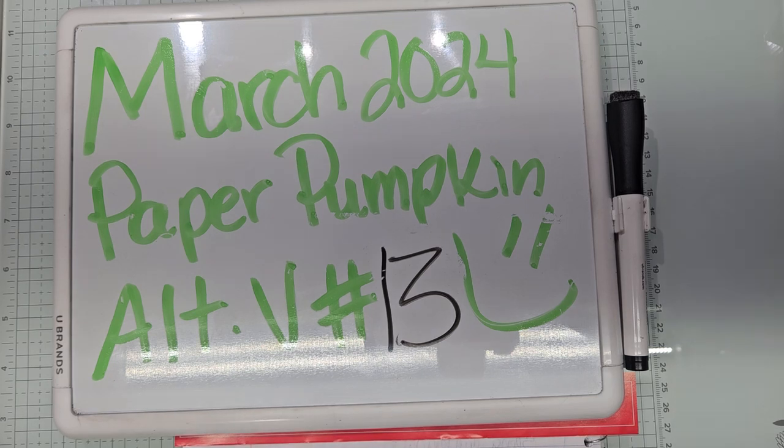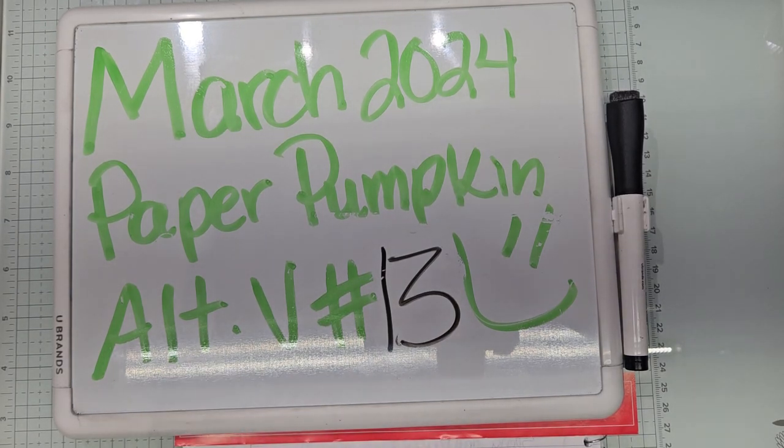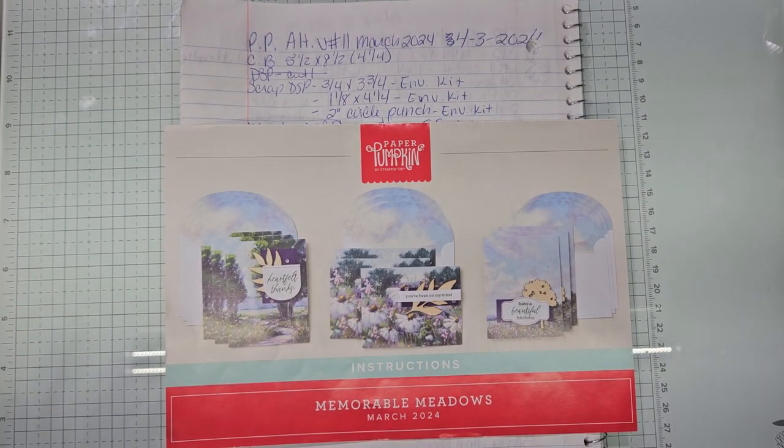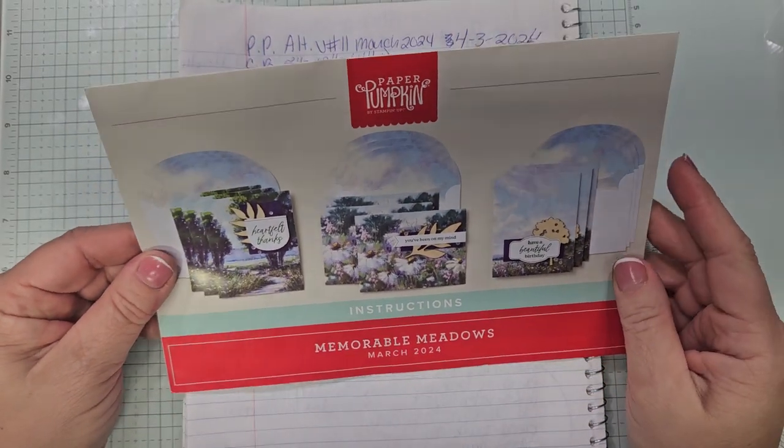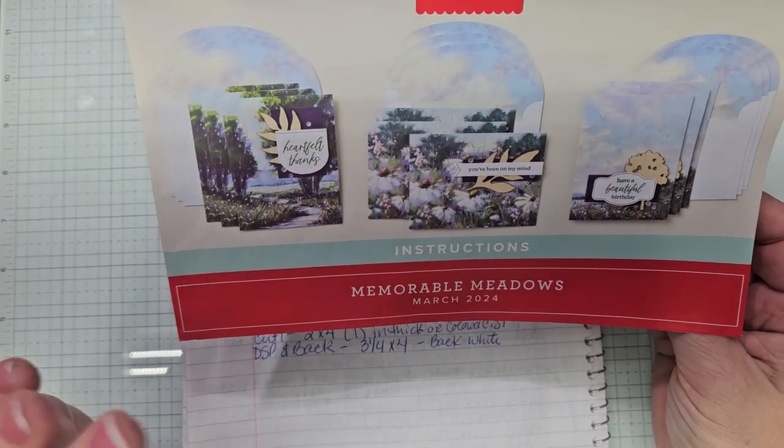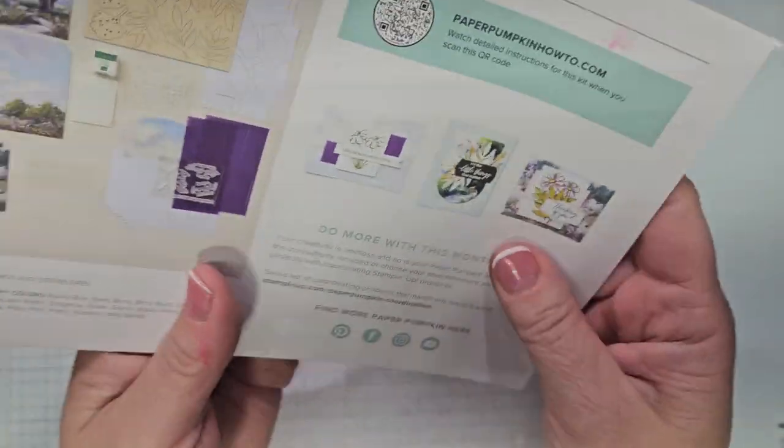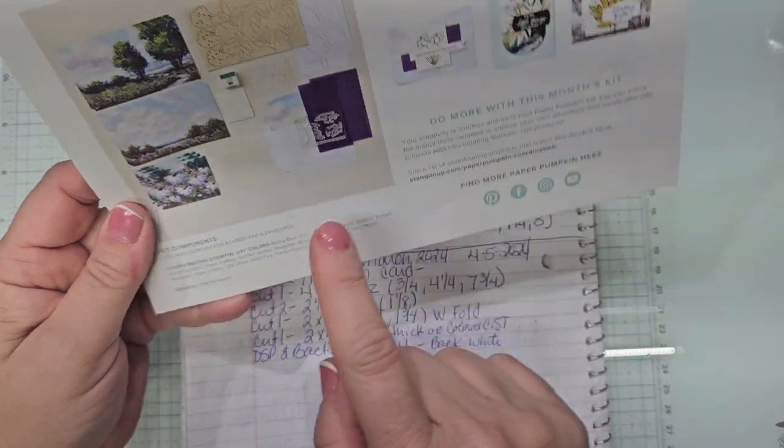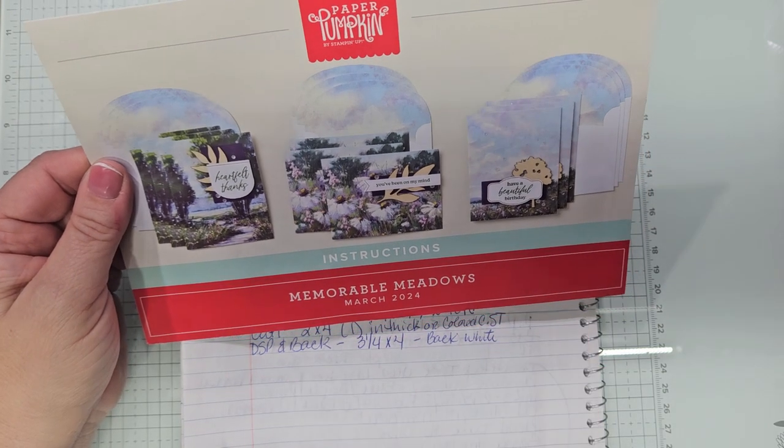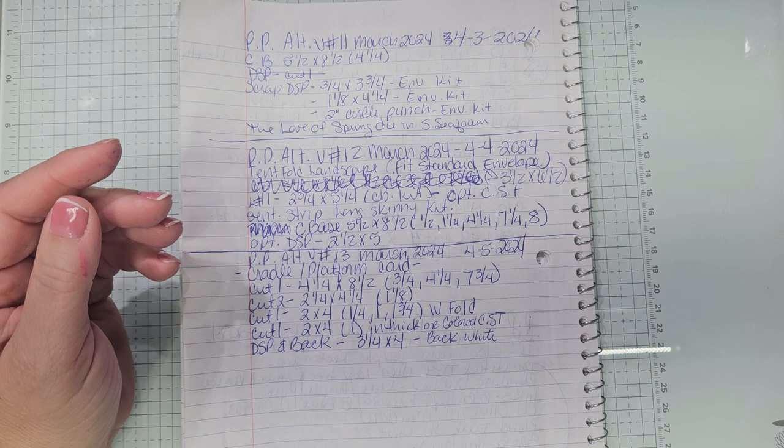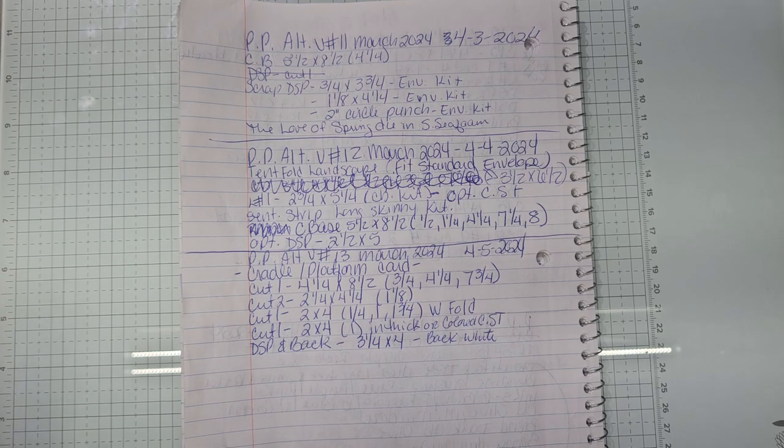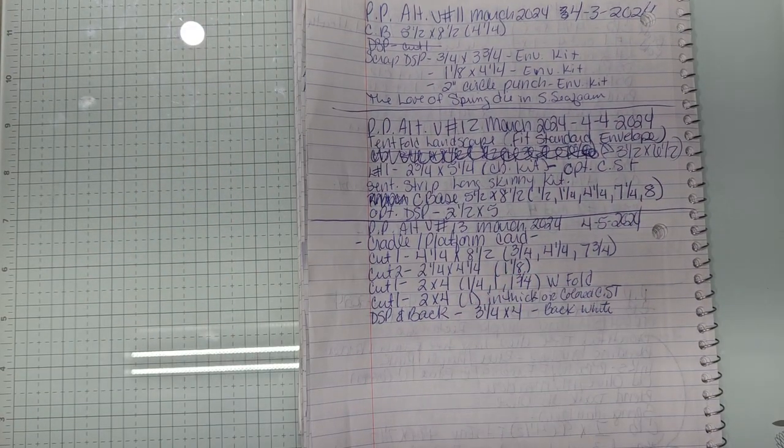This is alternative video number 13. We are going to be doing a cradle slash platform card for video number 13. This month's kit is called Memorable Meadows. This is the instruction and flyer sheet that comes with the kit. You got to do three of this one, three of this one, and three of this one. You get a visual of everything in the kit, the QR code, and the coordinating colors. If you were here to see the projects as they were designed, I'm sorry to disappoint you. That's just not my thing. I like to do my own thing with just one box from Paper Pumpkin.